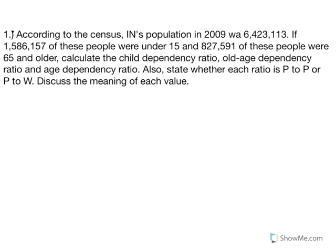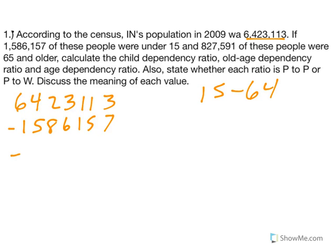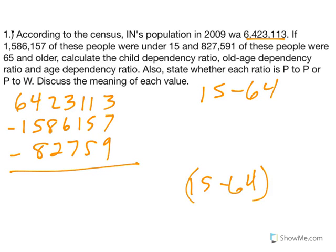Let's get to number one. According to the census, Indiana's population in 2009 was 6,423,113. If 1,586,157 of these people were under 15 and 827,591 were 65 and older, let's calculate the three ratios. We know the total population is here, but we don't know the 15 to 64 number. We're going to take 6,423,113, take away the young people, take away the old people, and this will give us our 15 to 64 age group, which is 4,009,365. That is the working class, the number we compare everything to.